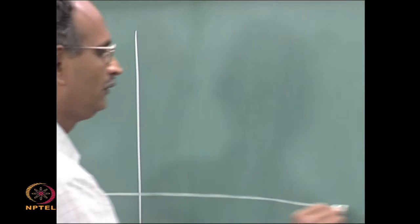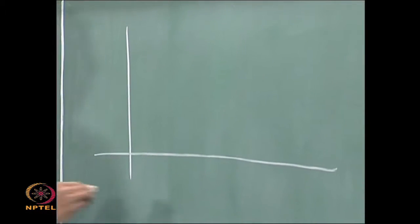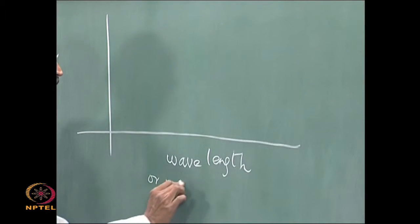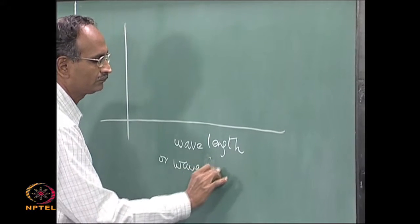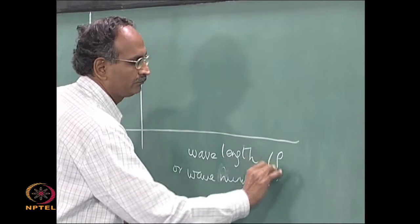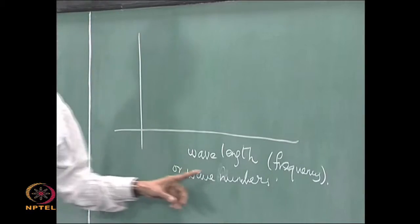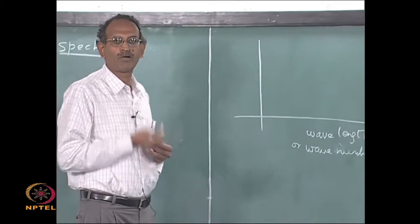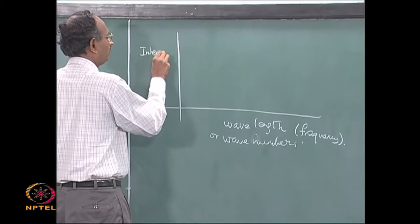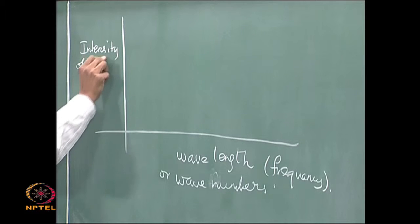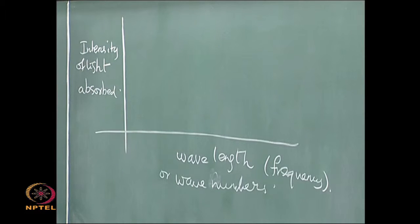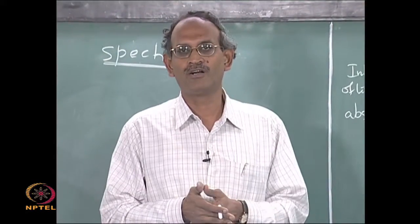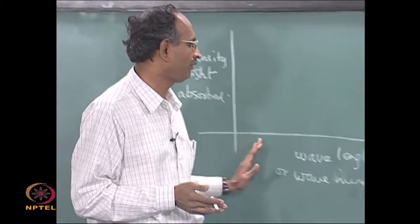In almost every spectrum you see x and y axes. The x-axis is usually for wavelength, wave numbers, or frequency — whichever way — it is a property of the light or electromagnetic radiation that you shine. On the y-axis is the amount of light that is absorbed or emitted, given as intensity. Ideally, if a substance absorbs radiation, absorption might be expected to take place at all wavelengths.